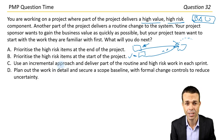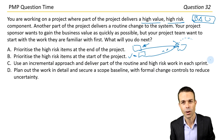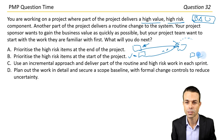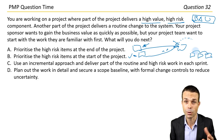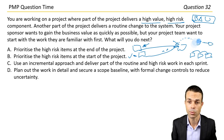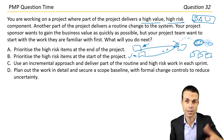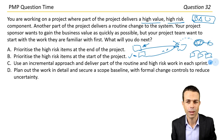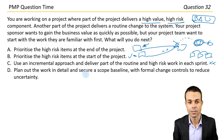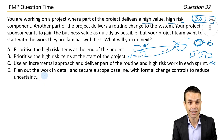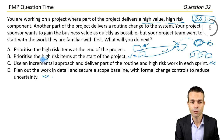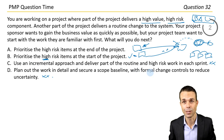Option C: Use an incremental approach and deliver part of the routine and high-risk work in each sprint. I think if anything I would look at a hybrid approach where some is agile and some is waterfall, so some is released in increments and iterated on for feedback. Option D: Plan out the work in detail and secure a scope baseline with formal change controls to reduce the uncertainty — that will probably make the situation worse. So let's get rid of those high-risk items first, then work on our BAU stuff. Answer B.